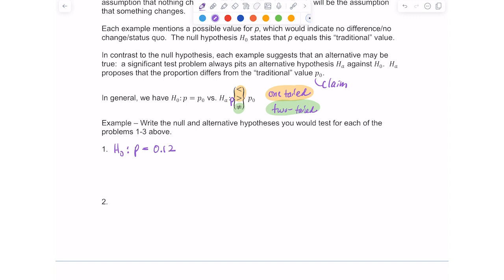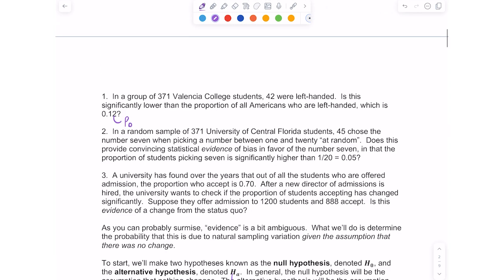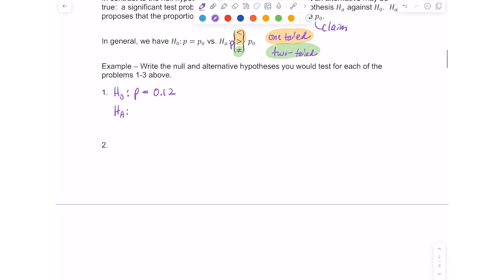The alternative is kind of like the cynic. It's like, hmm, I don't know about that. I think it might be less than that. So where the question says, is this significantly lower than the proportion of all Americans who are left-handed? Lower implies the proportion of Americans that are left-handed is less than 0.12. So that's my hypotheses for number one.